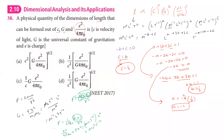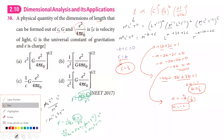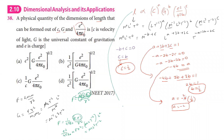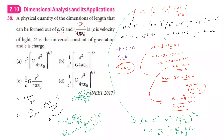Substituting: length is proportional to C^(−2) times G^(1/2) times (E²/4πε₀)^(1/2). That is proportional to (1/C²) times √G times √(E²/4πε₀). The fourth option is the correct answer.